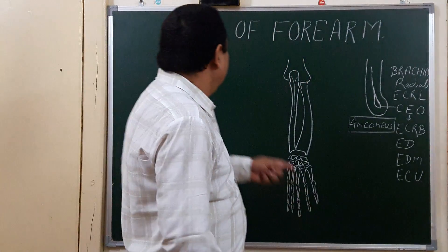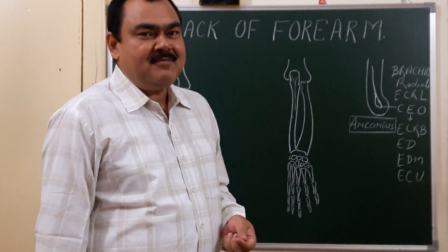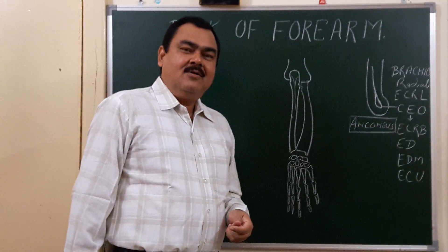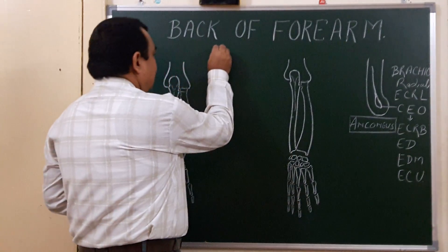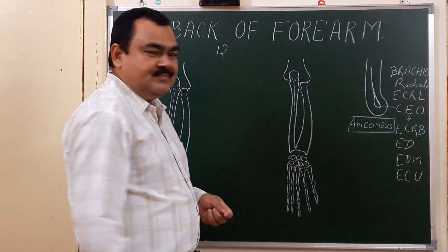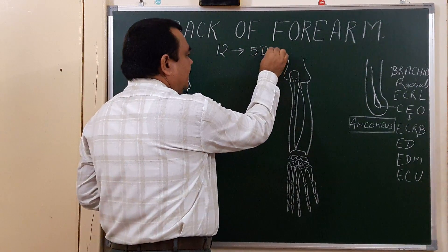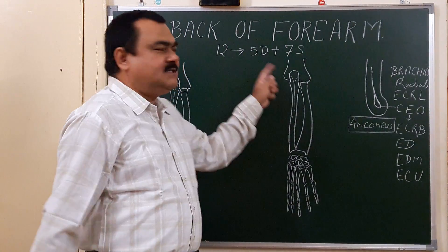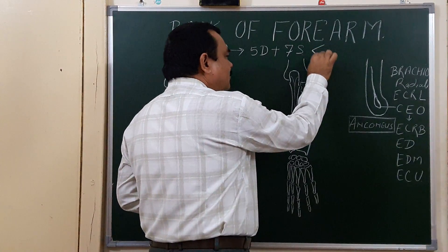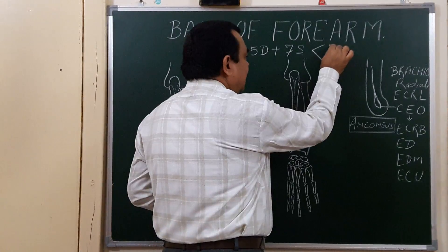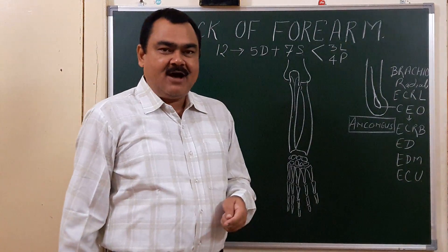Now we'll discuss the back of the forearm — muscles, vessels, and nerves. There are 12 muscles in the back of the forearm, arranged into two groups: five deep muscles and seven superficial muscles. The seven superficial muscles are further divided into three lateral group and four posterior.